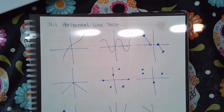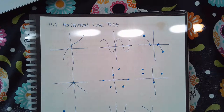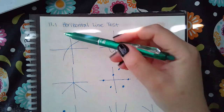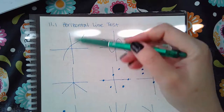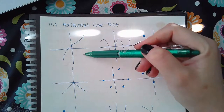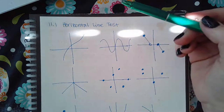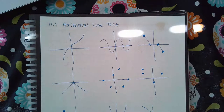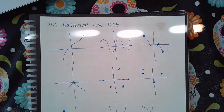This topic is 11.1 Horizontal Line Test. We know about the vertical line test — that's where you imagine a bunch of vertical lines on the graph, or draw them in. If any one of those vertical lines touches the graph more than one time, then it's not a function.